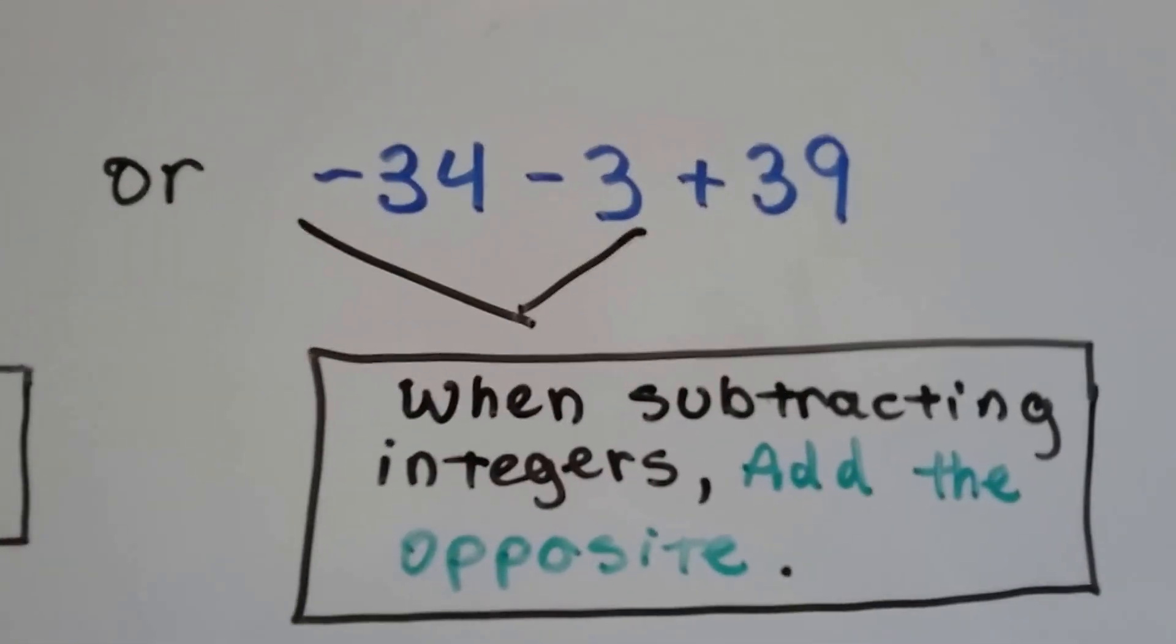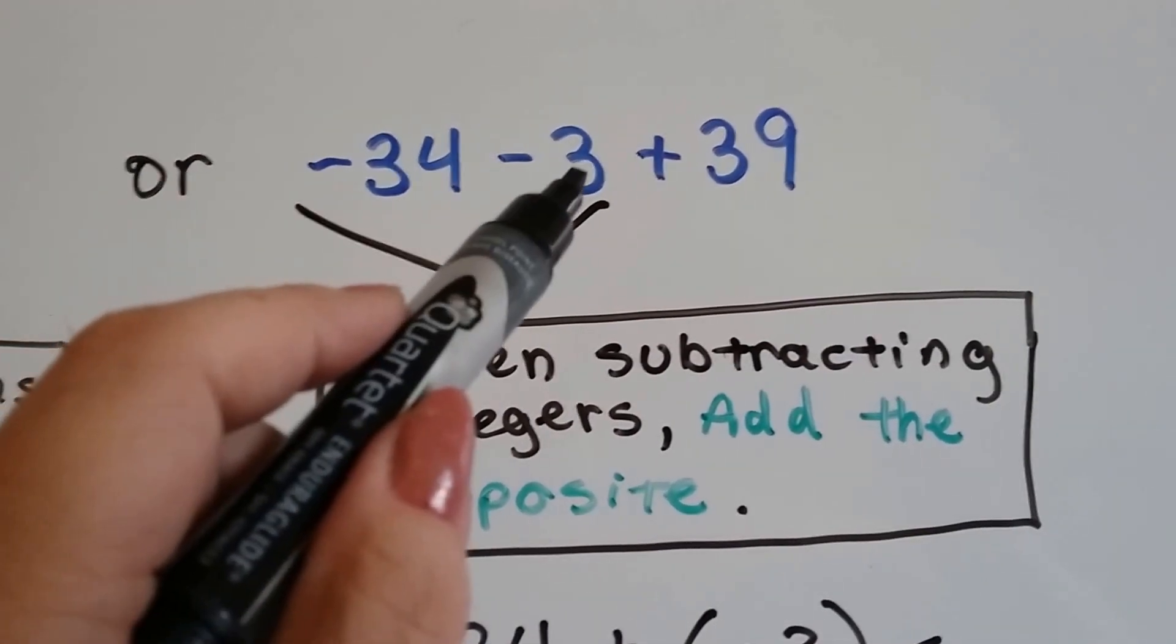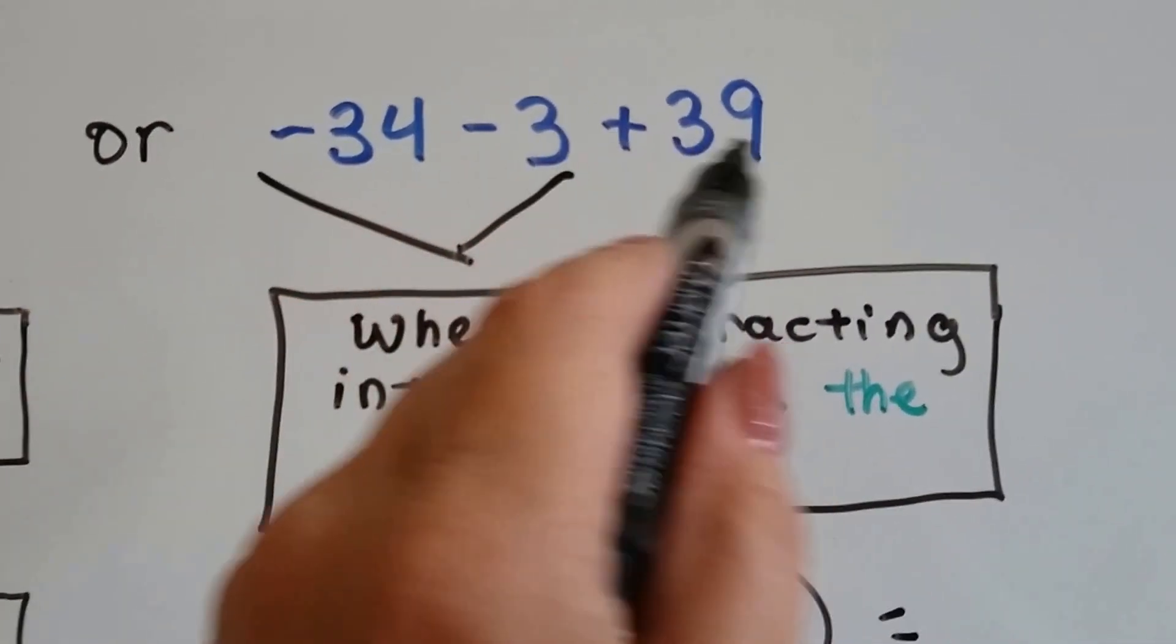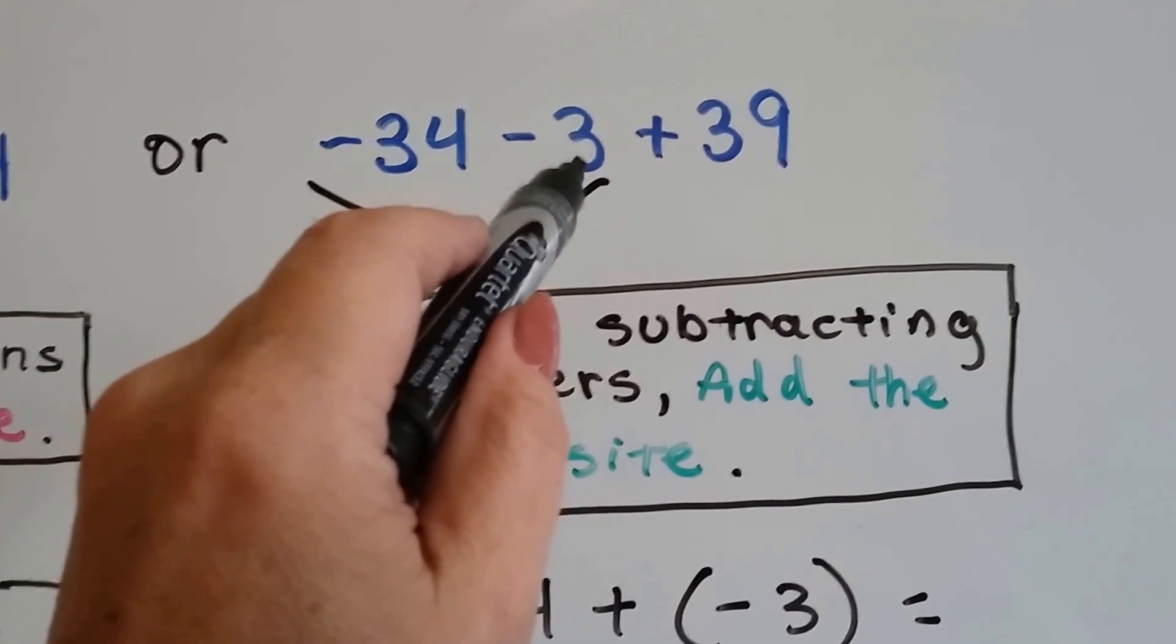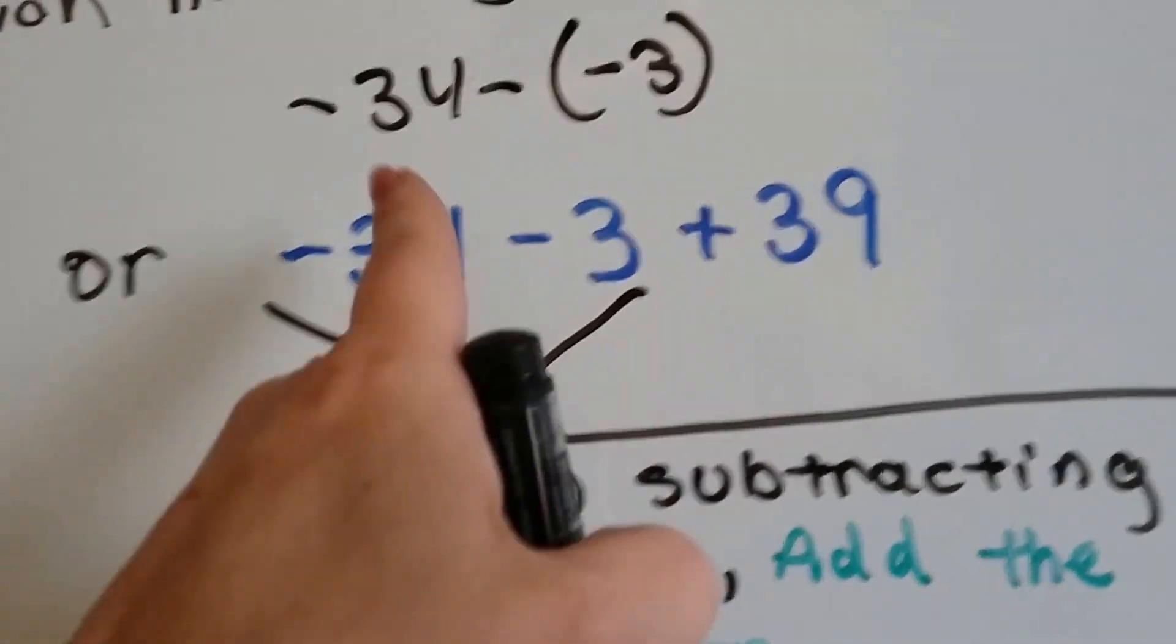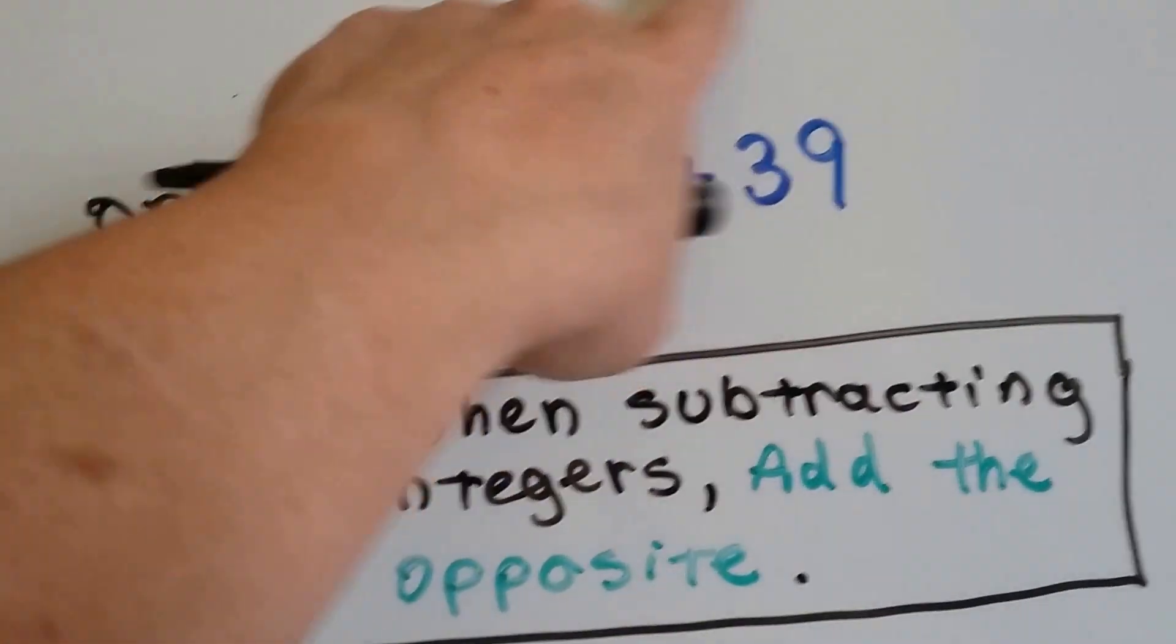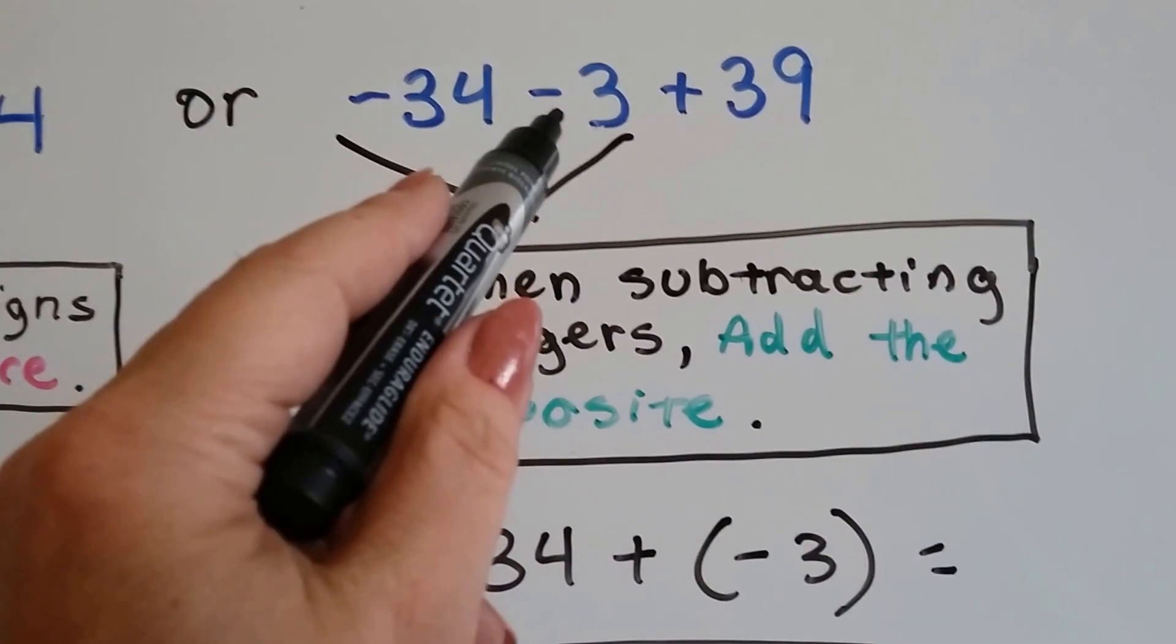So, now we start with negative 34 minus 3 plus 39. So, we've got negative 34 minus 3. Well, when we subtract, what do we do? It's subtracting, isn't it? We add the opposite. Whenever you see a subtraction sign with integers, you add the opposite. So, that's going to turn into a plus sign. And because he's not in parentheses, he's a positive 3, isn't he? If this was negative 34 minus negative 3, it would have been written like that, right? With him in parentheses, and it's not. So, that means he's positive. This is the subtraction sign. So, there's no parentheses. So, we know he's positive. So, now we need to add the opposite. So, if he's positive, we're going to add the negative.